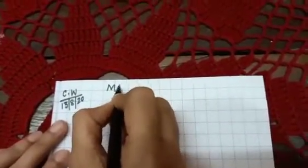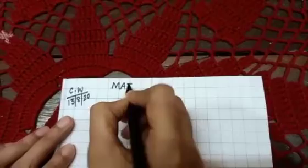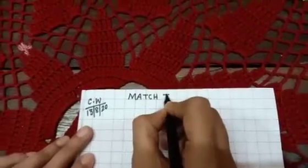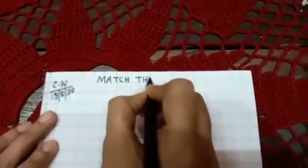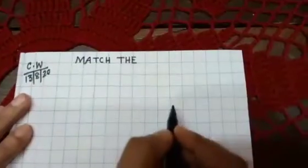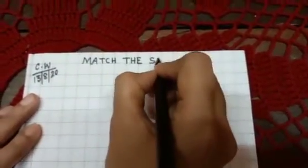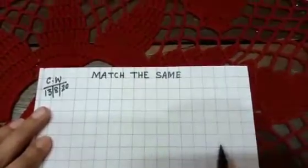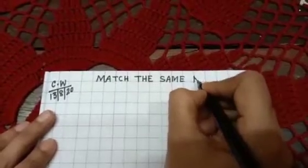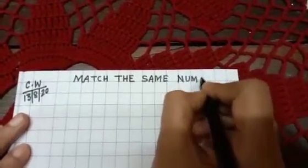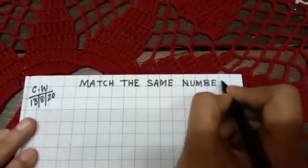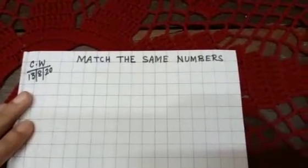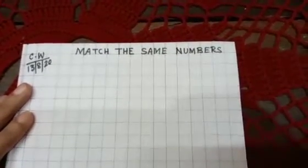Write the title: 'Match the same numbers.' M-A-T-C-H, match; T-H-E, the; S-A-M-E, same; N-U-M-B-E-R-S, numbers. Match the same numbers.